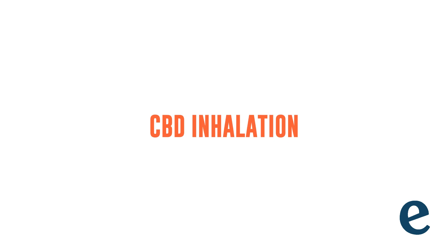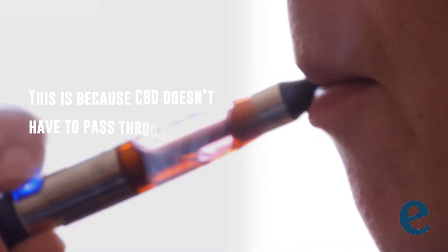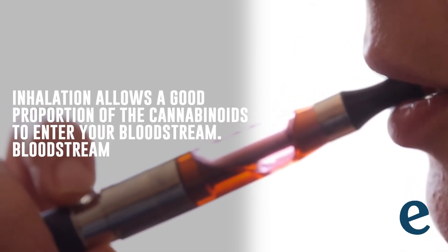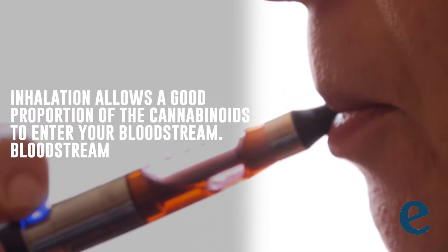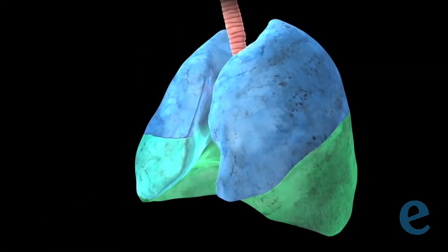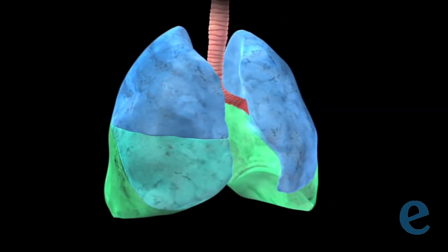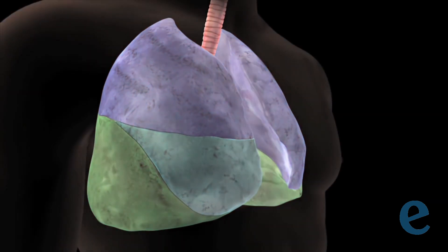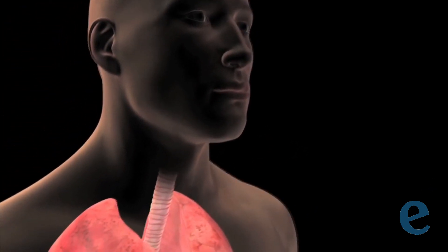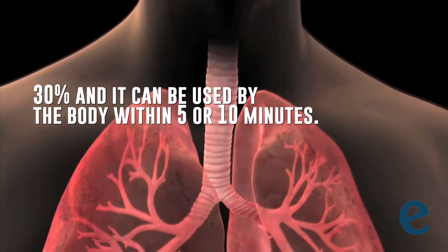The third method is CBD inhalation. Inhaling CBD has significantly higher bioavailability compared to most other forms, and much more than oral consumption. This is because CBD doesn't have to pass through your digestive tract before being absorbed into your bloodstream. Not only does this reduce absorption time, but inhalation allows a good proportion of cannabinoids to enter your bloodstream. When you inhale CBD through vaping, it enters your bloodstream through your lungs. With each breath, you inhale a significant amount of CBD, which is absorbed through the thin membranes of the alveoli almost instantly. Through inhalation, the absorption rate of CBD is around 30%, and it can be used by the body within 5 to 10 minutes.